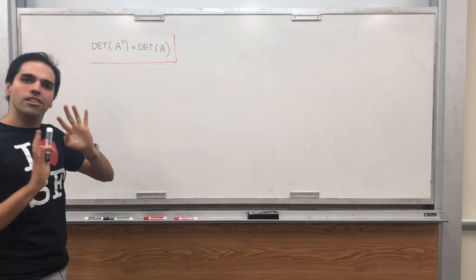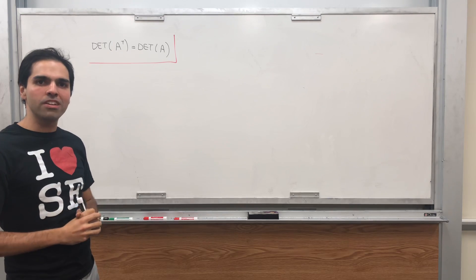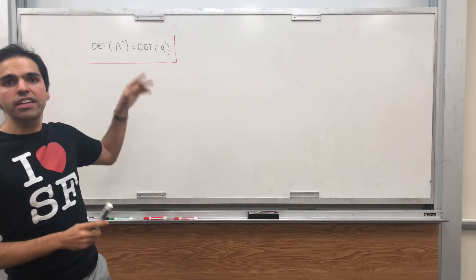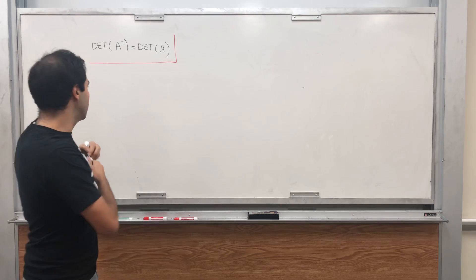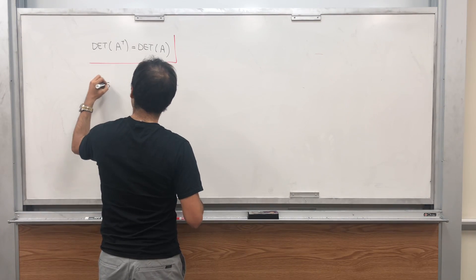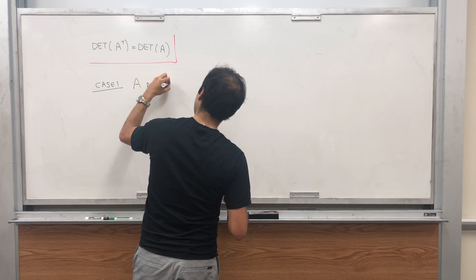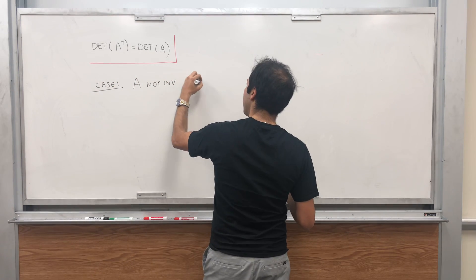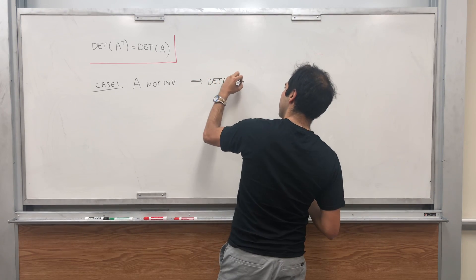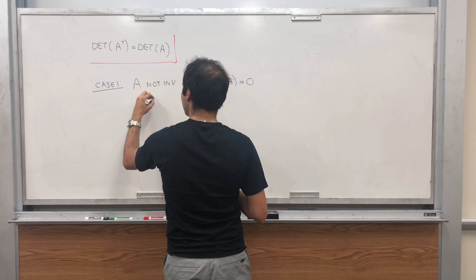Just like the proof that the determinant of AB equals the determinant of A times the determinant of B, let's get rid of the case where A is not invertible. If A is not invertible, then on the one hand, we know that the determinant of A is zero.